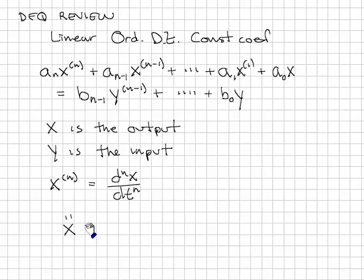x double dot plus 2 zeta omega_n x dot plus omega_n squared x equals f of t. This is a generic second order differential equation. The output is x, the input is f of t. The solution to this is x, which is some function of time.